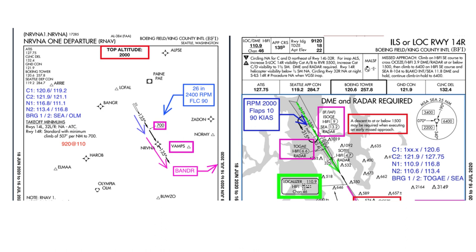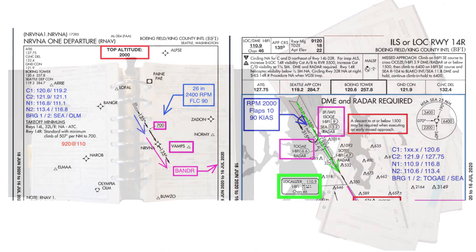Annotations can do more than highlight important altitudes and headings. For example, IFR students and instrument instructors may find it helpful to add procedural notes to charts. These departure and approach charts include target power settings and configurations, and reminders for setting common nav frequencies and PFD bearing pointers.